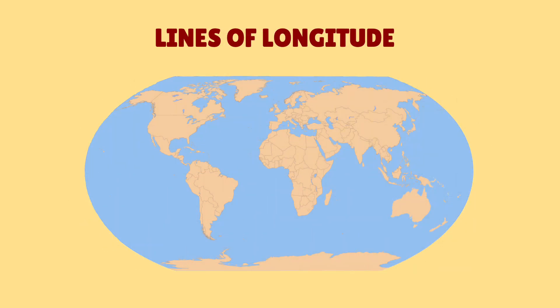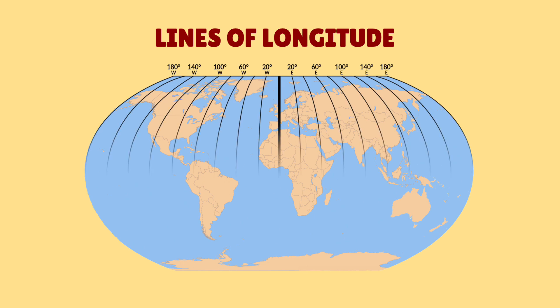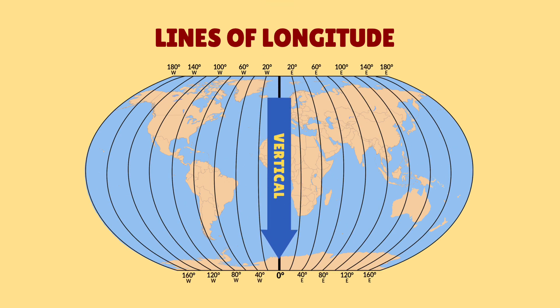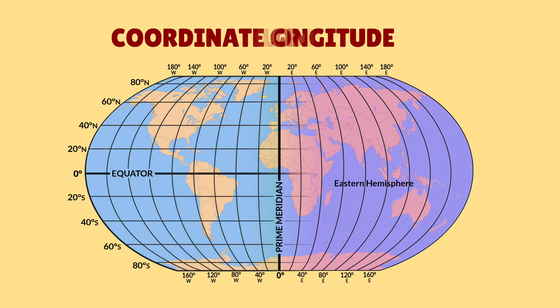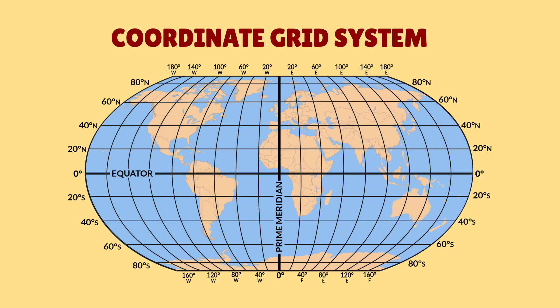Lines of longitude, on the other hand, run north to south and are vertical. Longitude lines show how far west or east a location is from the prime meridian. The prime meridian is the longitude line at zero degrees. Everything west of the prime meridian is in the western hemisphere, and everything east of the prime meridian is in the eastern hemisphere. When we put lines of latitude and lines of longitude together, that's the coordinate grid system.